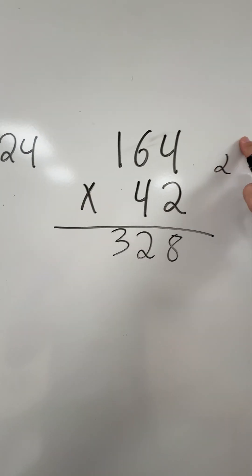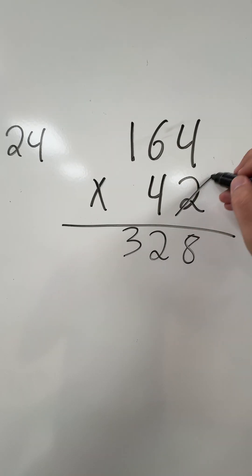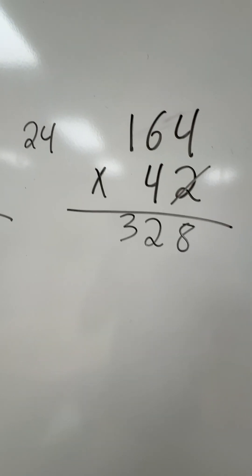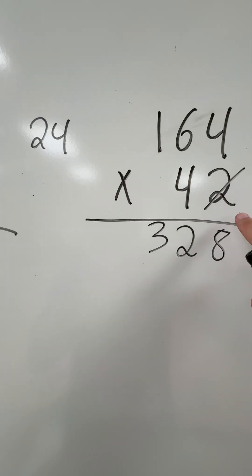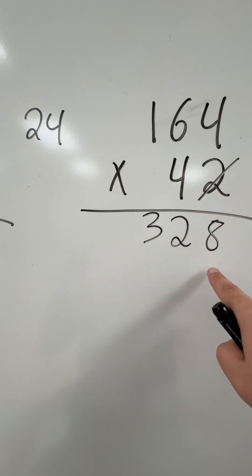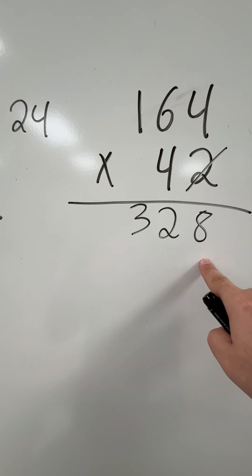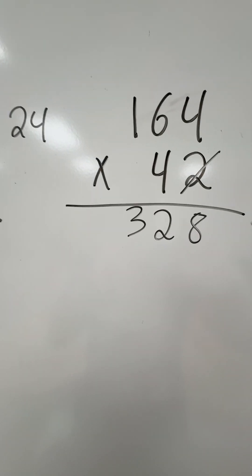Now I'm done with the two. I can cross that out because I'm done with that. Now I'm focused on the four, but because the four is in the tens place, I'm not currently using this ones place. I'm going to put my placeholder. That placeholder is a zero.